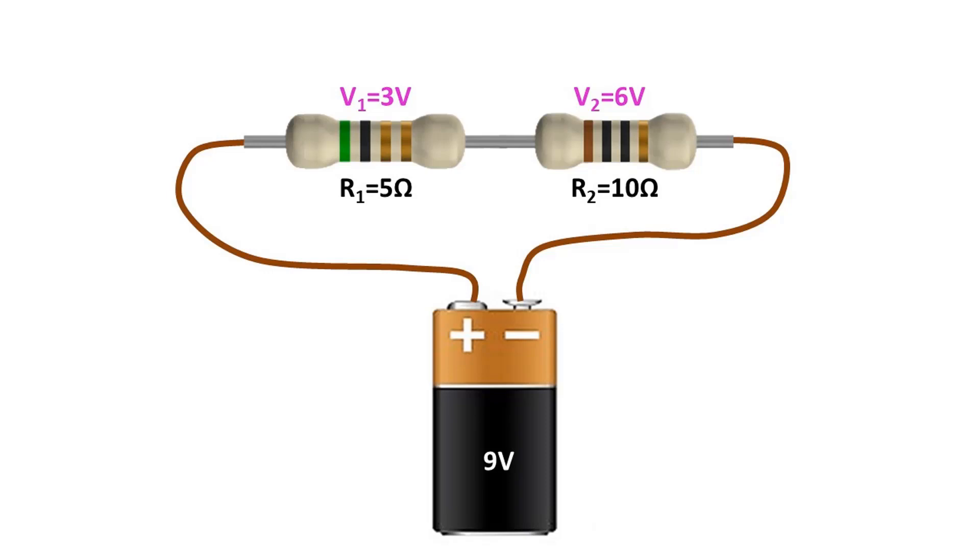We can calculate the voltages on the resistor in this way without finding the current value. In addition, the total voltage consumed by the two resistors gives the source voltage. Otherwise, we would have miscalculated.